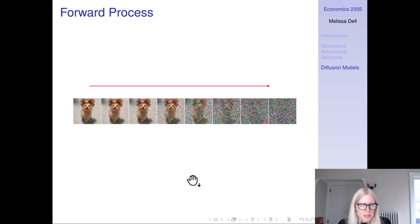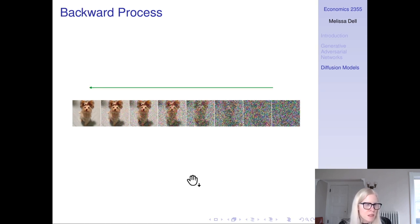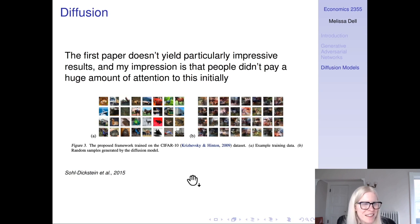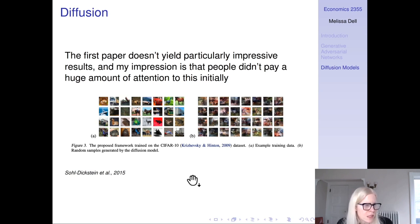You have this forward process where you're adding noise to the image, and this backward process where the original image is reconstructed one step at a time. The first paper doesn't yield particularly impressive results — you see the training data on the left and the generated image on the right — and my impression is people didn't pay a huge amount of attention to this initially.